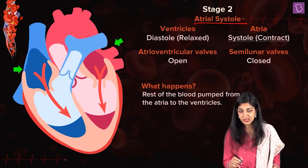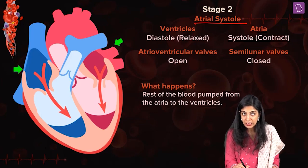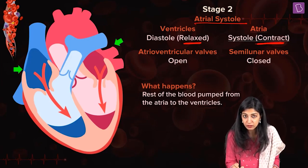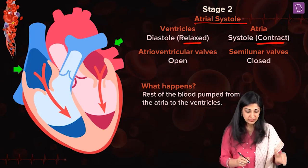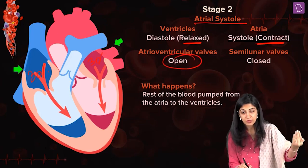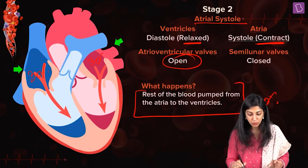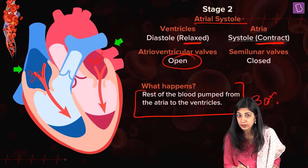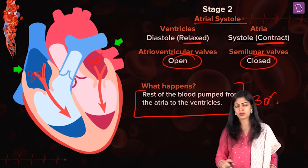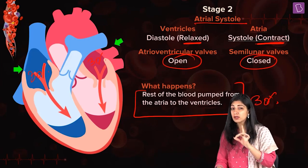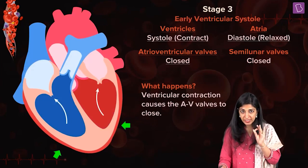Stage two — atrial systole, which means contraction. Notice this is not joint; only the atria contract while the ventricles are still in diastole. Have a look at the image. The 30% of blood still remaining in the atria is pushed down to the ventricles due to atrial contraction. At this stage, the ventricles are completely filled with blood. The semilunar valves are still closed — students often make this mistake, so remember: in atrial systole, semilunar valves remain closed.